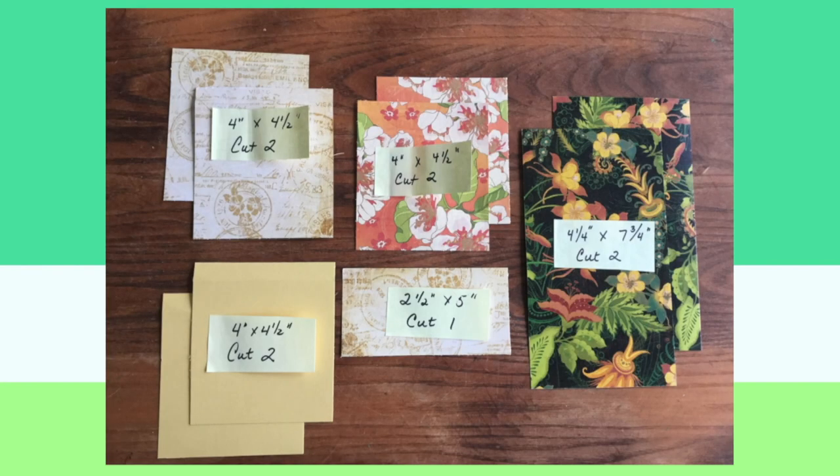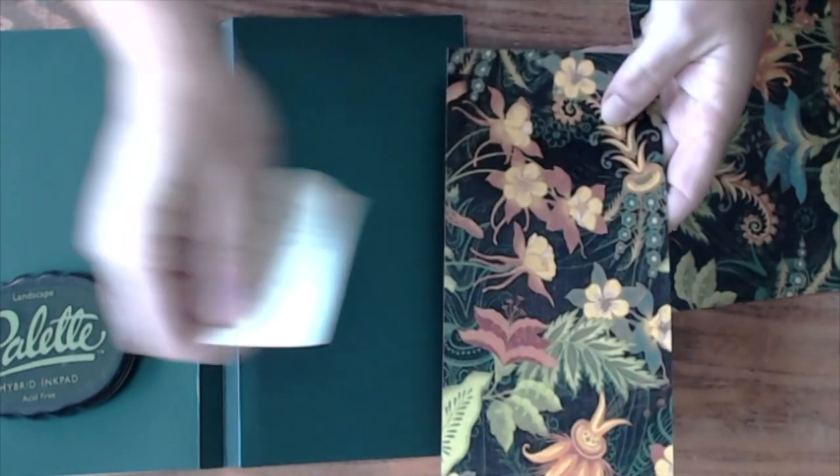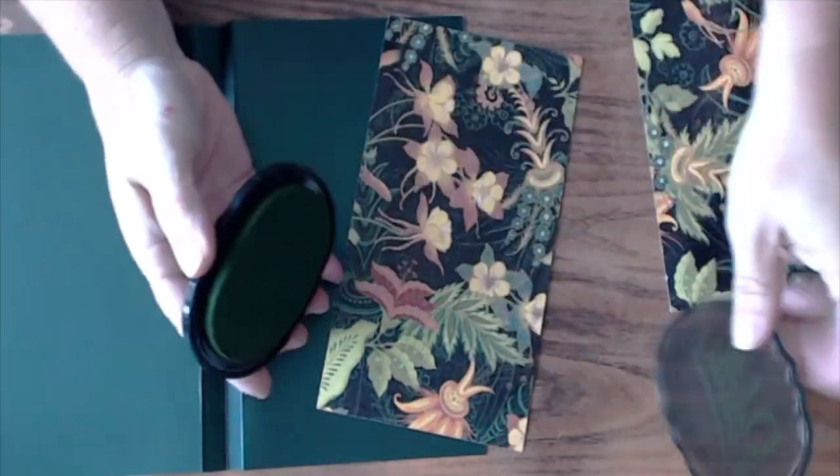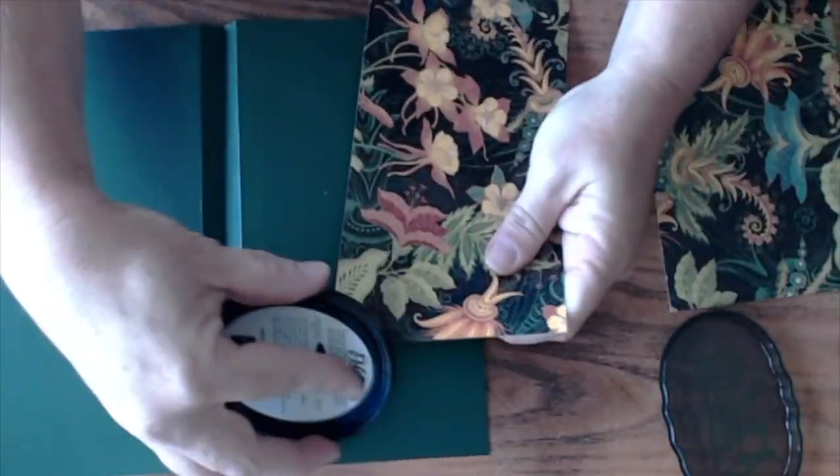Cut your patterned papers to the dimensions shown in this photo. Ink the edges of all of your pieces of cut paper, and then mount one of the rectangular pieces to the front center of your book.